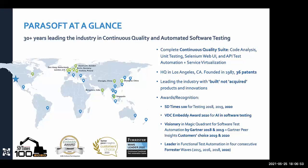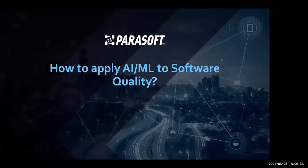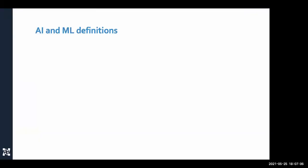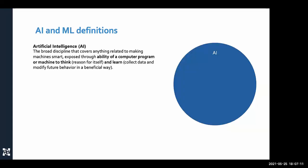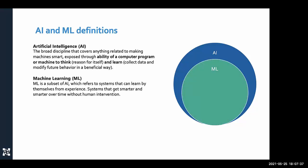Before discussing how we apply AI and machine learning to software quality, I want to clarify definitions. Artificial intelligence is a wide range of behavioral models where software exhibits human-like intelligence through reasoning and learning. Machine learning is a subset of AI specialized on learning from observations of data and changing behavior based on those observations without human interaction.